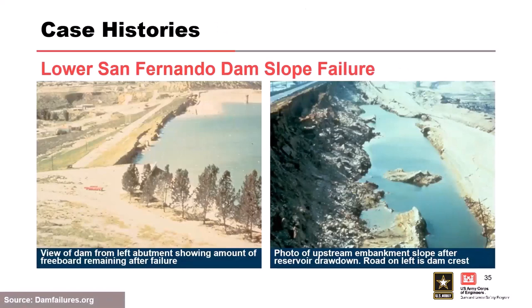The Lower San Fernando Dam slope failure is a well-known case history. The Lower San Fernando Dam was a water supply reservoir in Southern California, constructed in the early 1900s using hydraulic fill deposition and mechanical construction. Water levels were maintained near the spillway crest until a 1966 review highlighted potential seismic issues, requiring the reservoir to be lowered by about nine feet. A large earthquake occurred in 1971; seismographs on the dam indicated a rock PGA of approximately 0.6 g, with a similar ground acceleration felt by the dam crest.